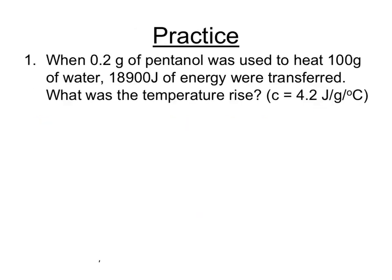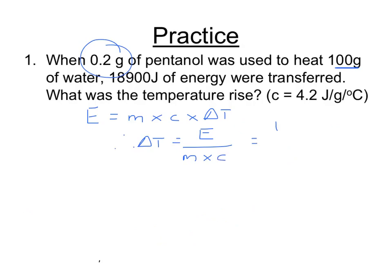Here's an example calculation. When 0.2 grams of pentanol were used to heat 100 grams of water, 18,900 joules of energy were transferred. What was the temperature rise if C is 4.2? The 0.2 grams of pentanol is a red herring — we don't need it. Using the mass of the water: temperature rise equals energy over mass times specific heat capacity, which is 18,900 divided by 100 times 4.2, and that comes to 45 degrees Celsius.